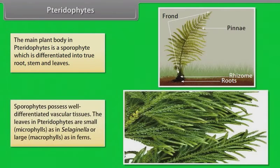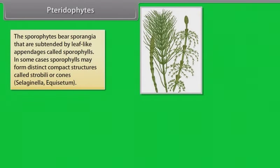The main plant body in pteridophytes is a sporophyte which is differentiated into true root, stem and leaves. Sporophytes possess well-differentiated vascular tissues. The leaves in pteridophytes are small, microphylls, as in Selaginella, or large, macrophylls, as in ferns. The sporophytes bear sporangia that are subtended by leaf-like appendages called sporophylls. In some cases, sporophylls may form distinct compact structures called strobili or cones, Selaginella, Equisetum.